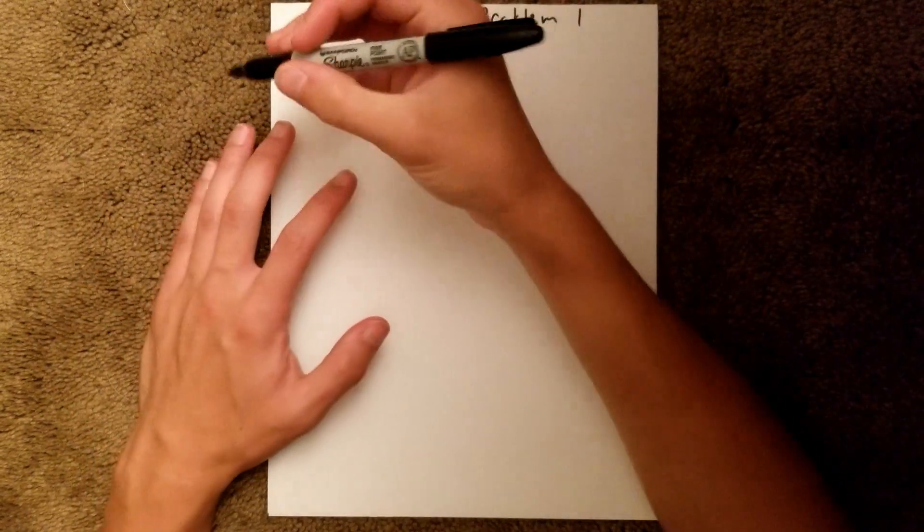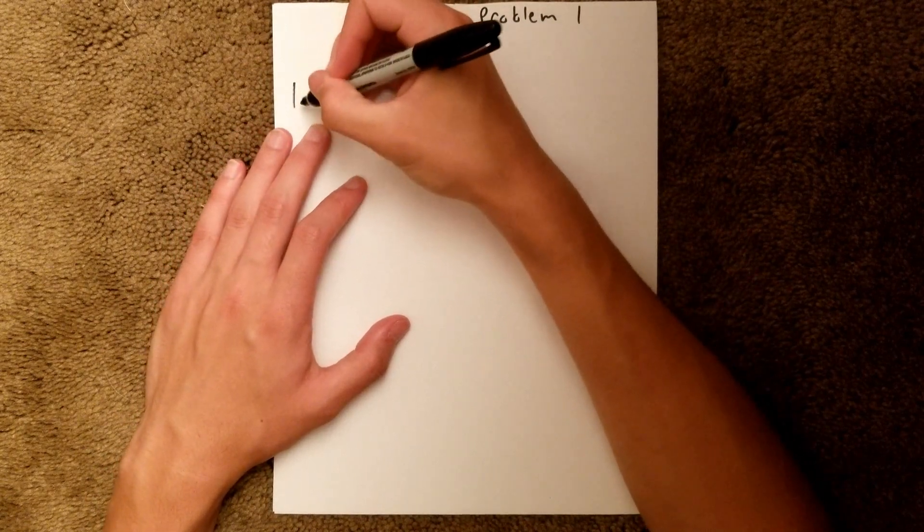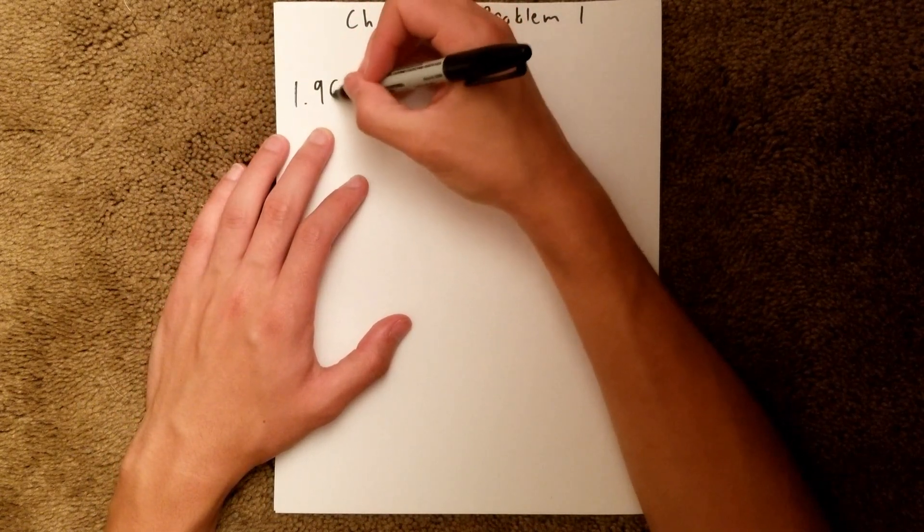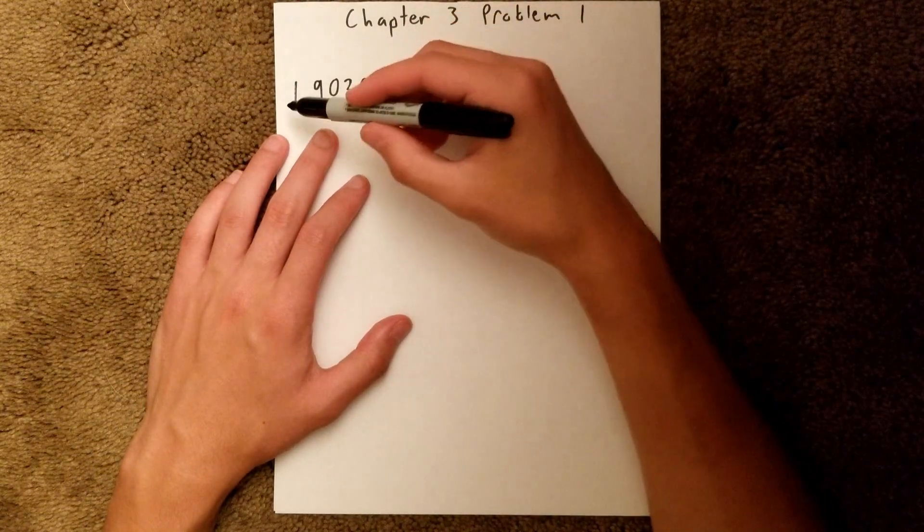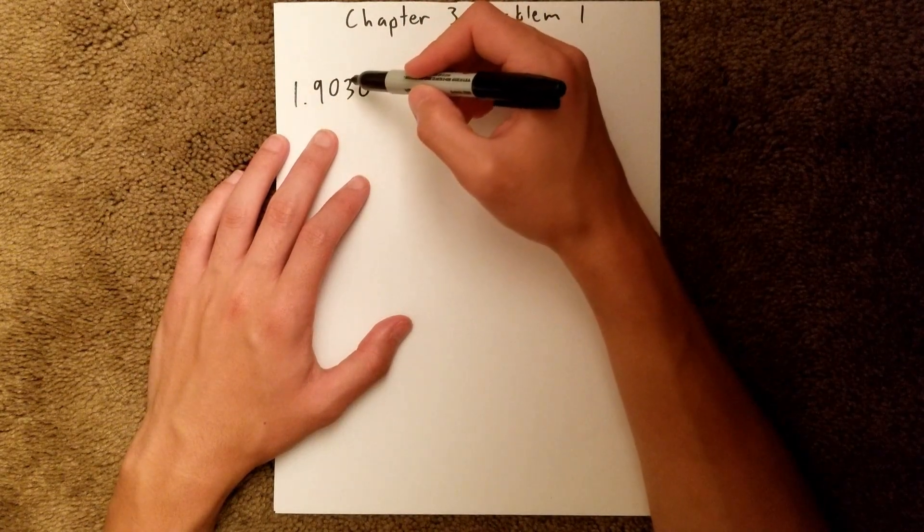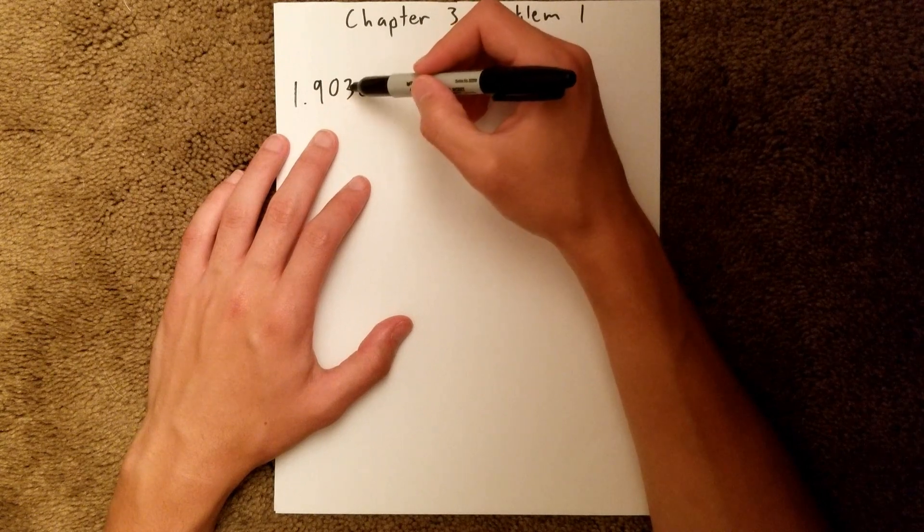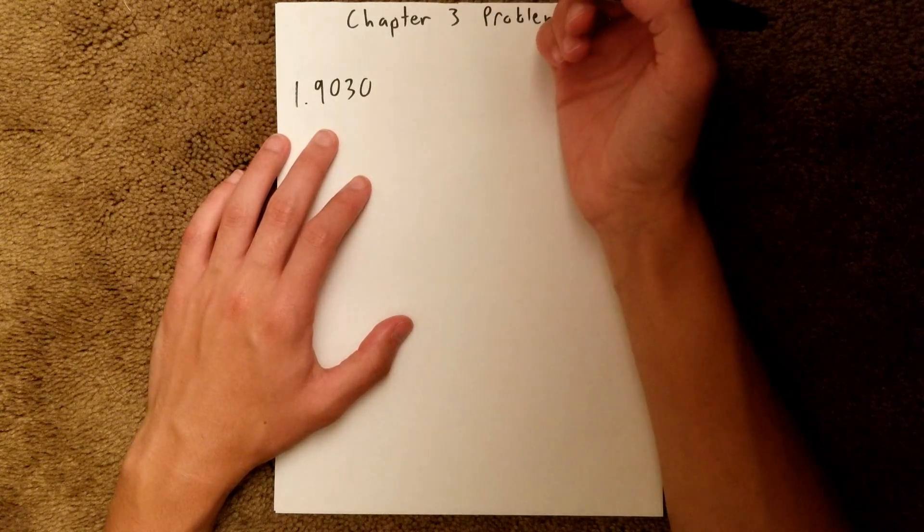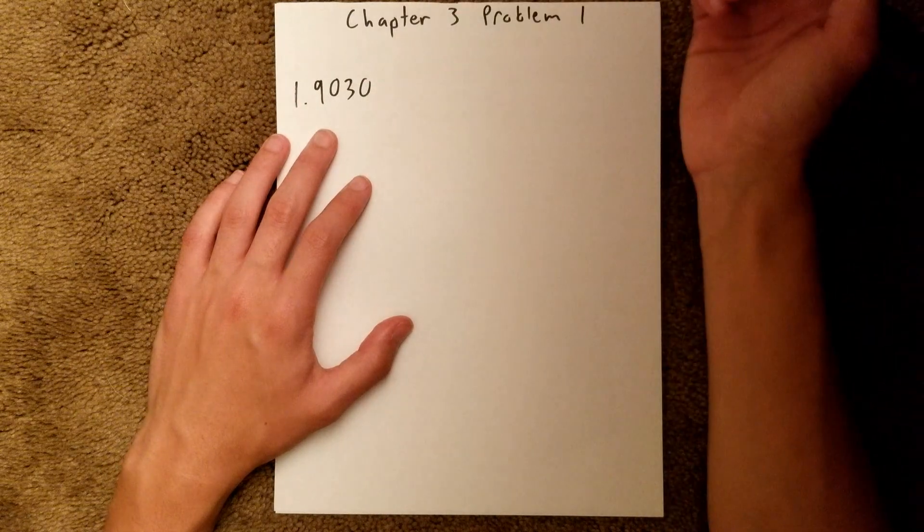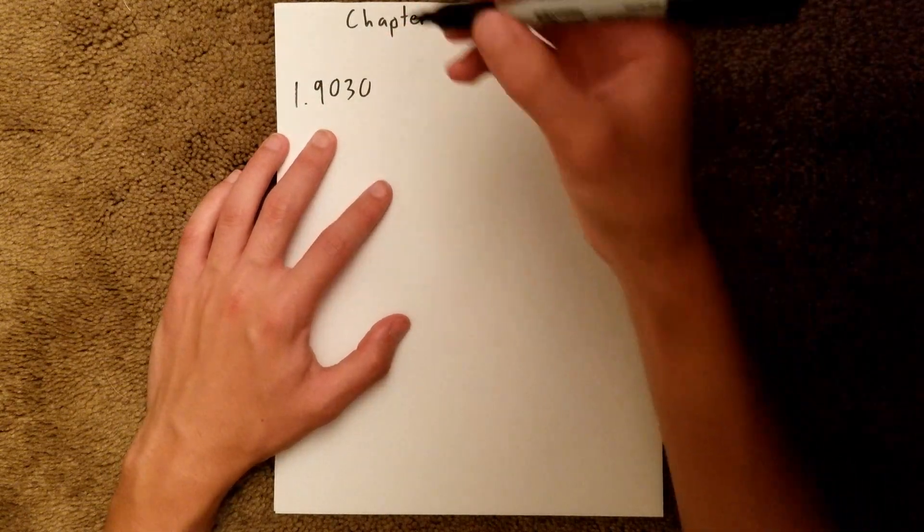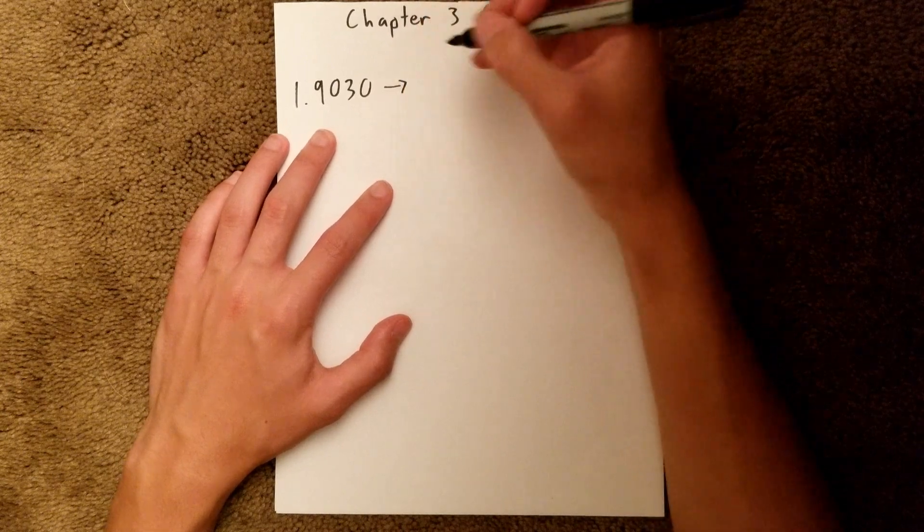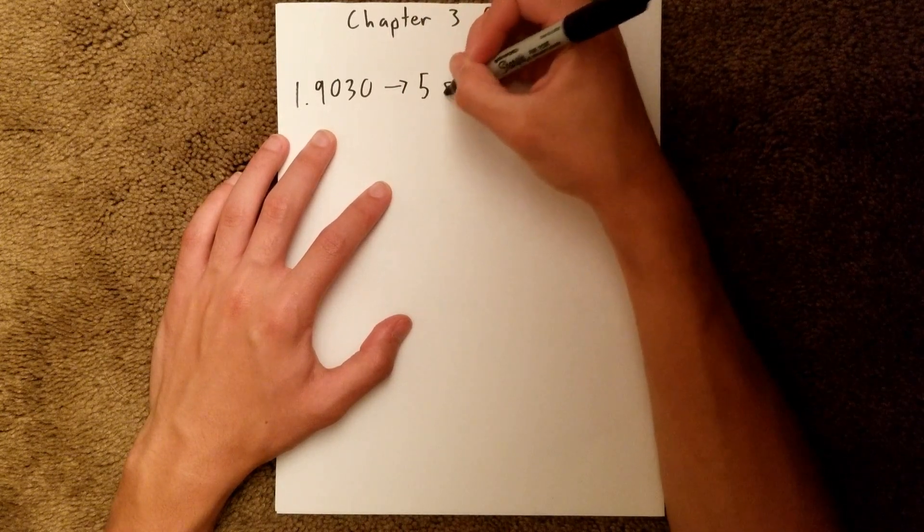So the first number we are given is 1.9030, and so all the non-zeros are significant. This zero is significant because it's in the middle of two non-zero digits, and this zero at the end is also significant because it is at the end and past a decimal point. So in this case, we have five significant figures.